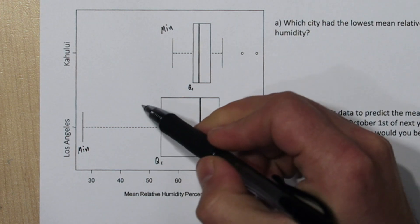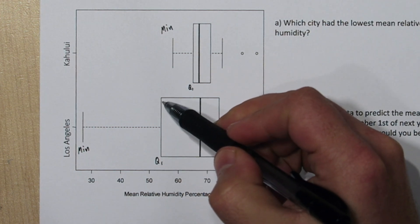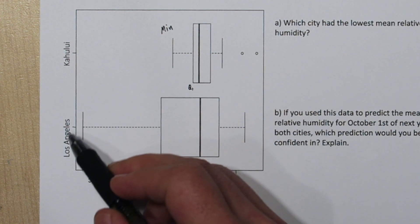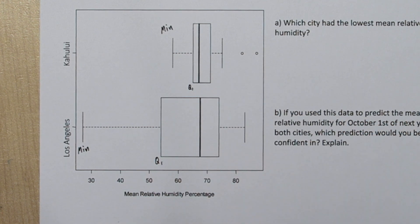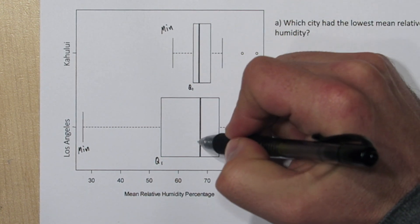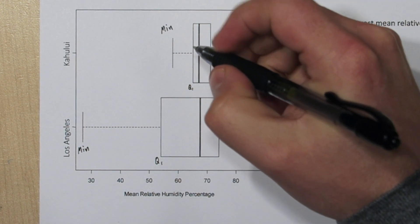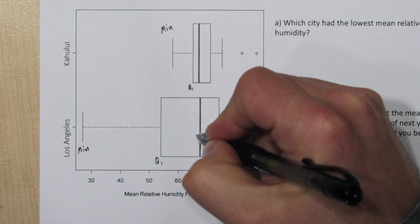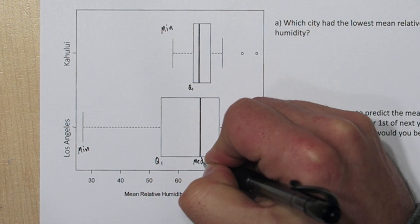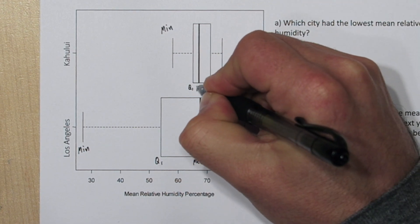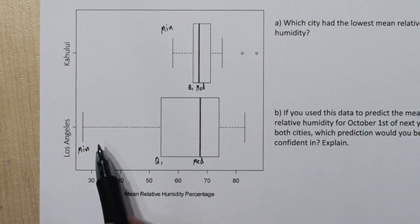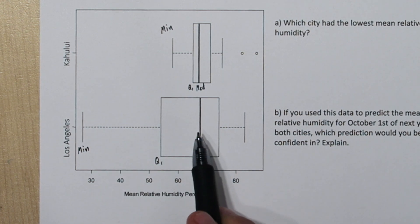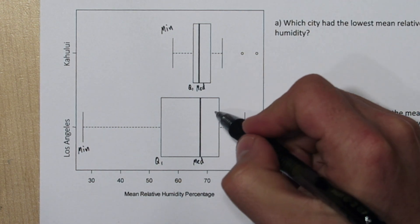Quartile 1 separates the lowest 25% of observations from the rest of the observations. This line in the middle is the median — it's not always bold, but in this case it is. The median divides the lower 50% of observations from the upper 50% of observations.